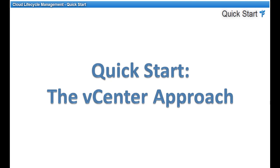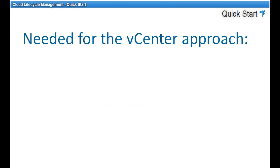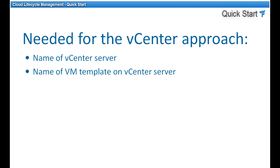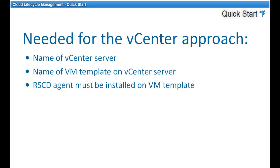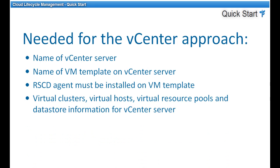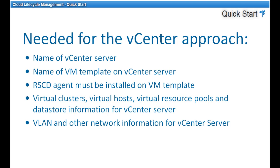To perform a procedure like the one I'm going to demonstrate, you'll need certain information. You'll need the name of the vCenter server, the name of the VM template on that vCenter server, and an RSCD agent must be installed on the VM template. You'll also need to know the virtual clusters, virtual hosts, virtual resource pools, data store information, VLAN and other network information for the vCenter server, and you'll need to log on to CLM as the cloud administrator. For a full list of all the information required for QuickStart, see the help for BMC Cloud Lifecycle Management.